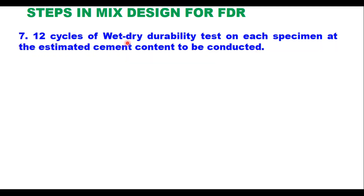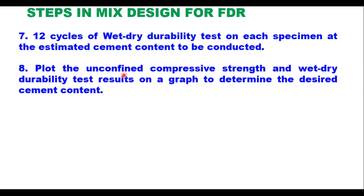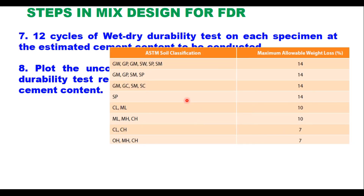The seventh step is to carry out 12 cycles of wet and dry durability testing on each specimen at each cement content to find the loss in weight after wet and dry cycles. A plot is made between unconfined compressive strength versus cement content, and wet and dry durability test result versus cement content, to determine the desired cement content. The maximum allowable weight loss after 12 cycles of wet and dry should be limited — for granular soils up to poorly graded sand it is 14 percent, and for clay and medium to high compressibility soils it is 7 to 10 percent.